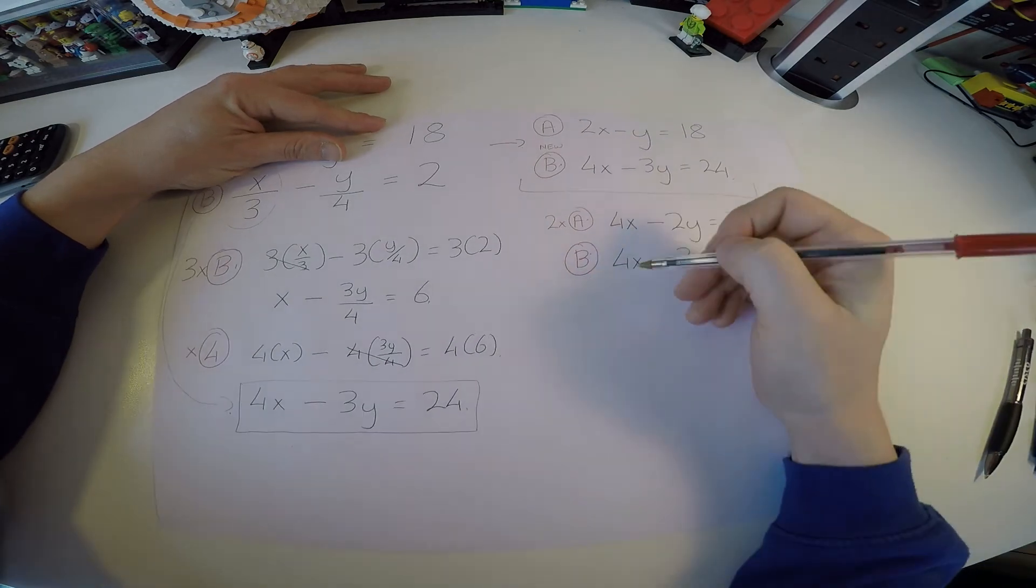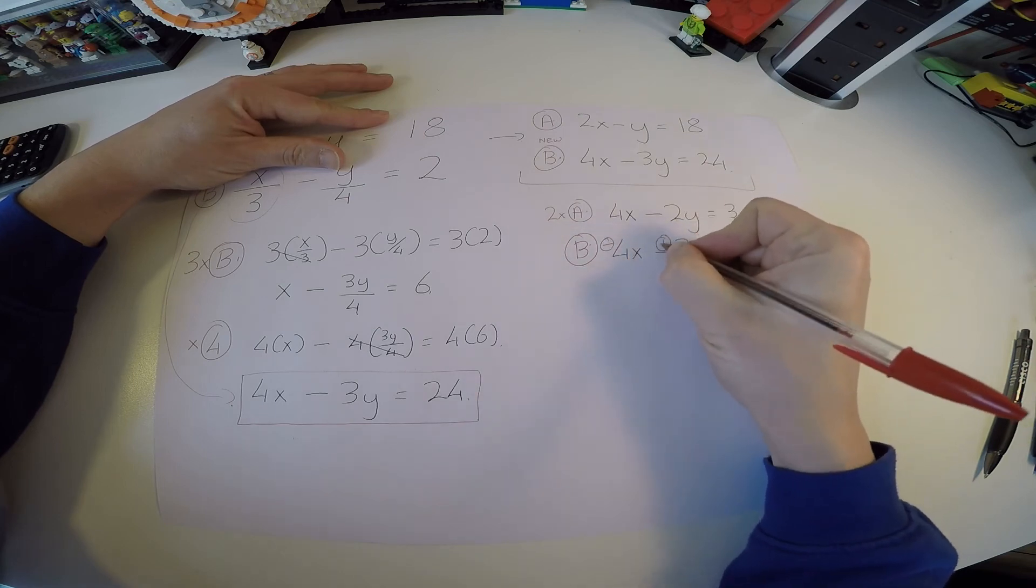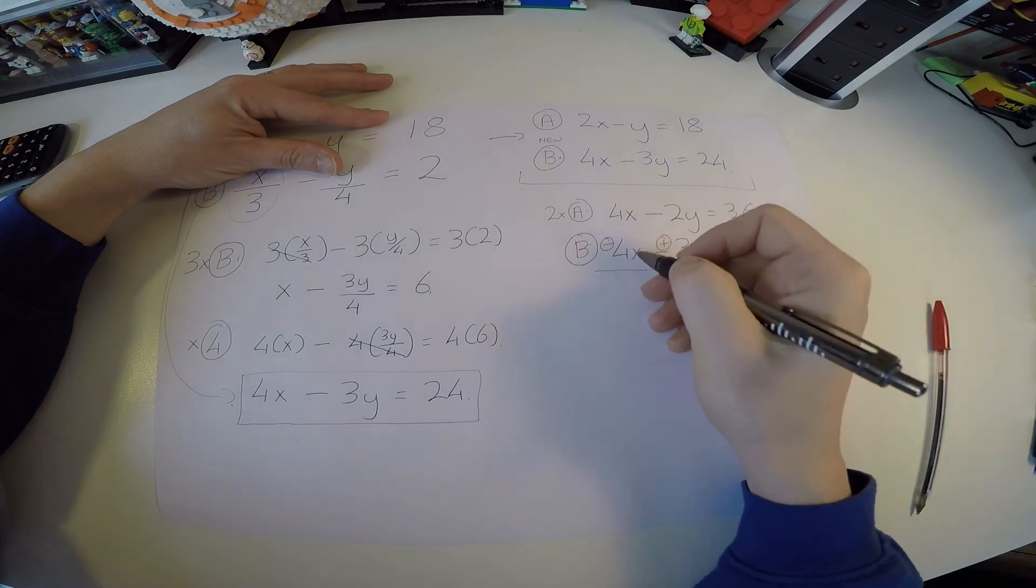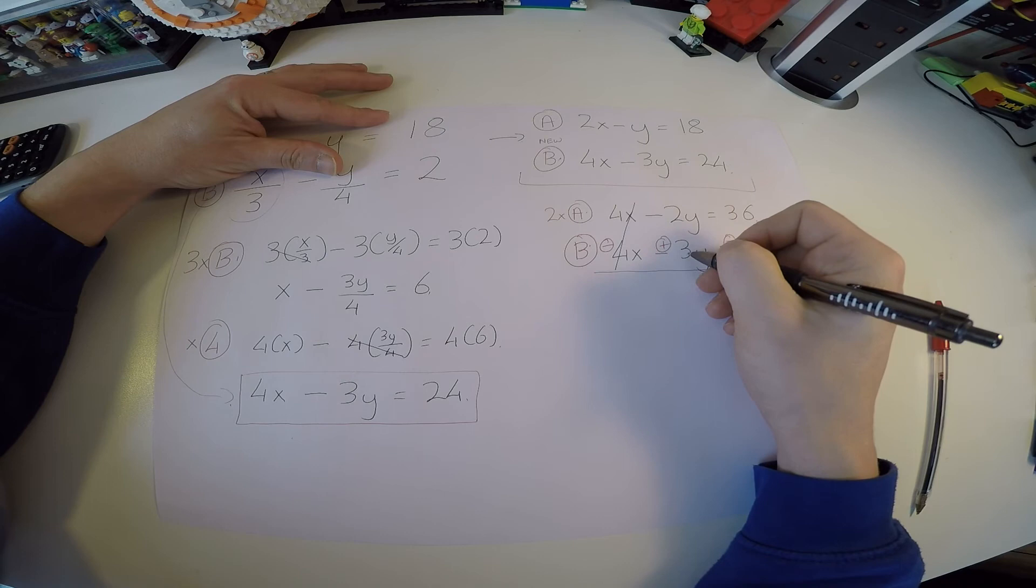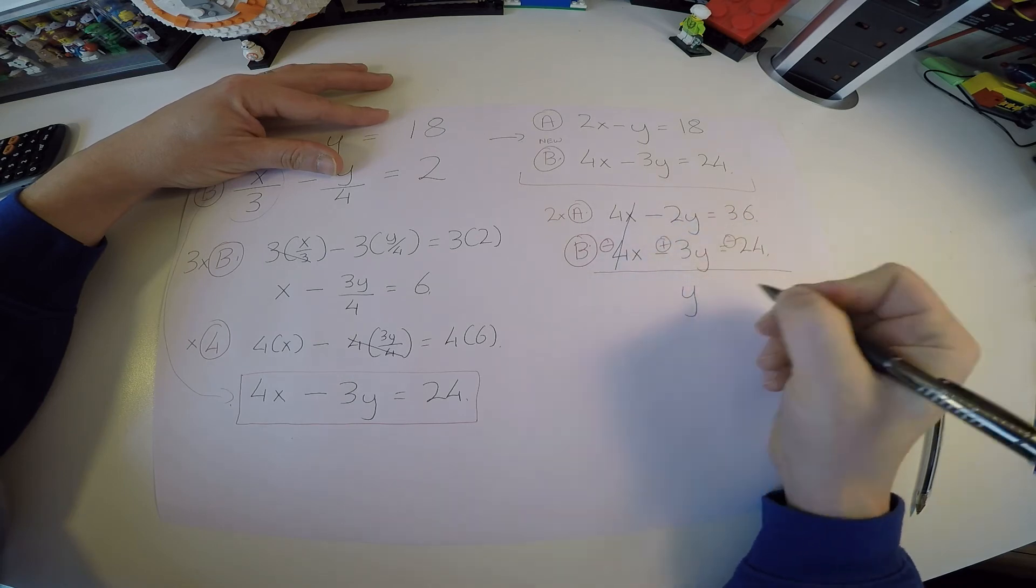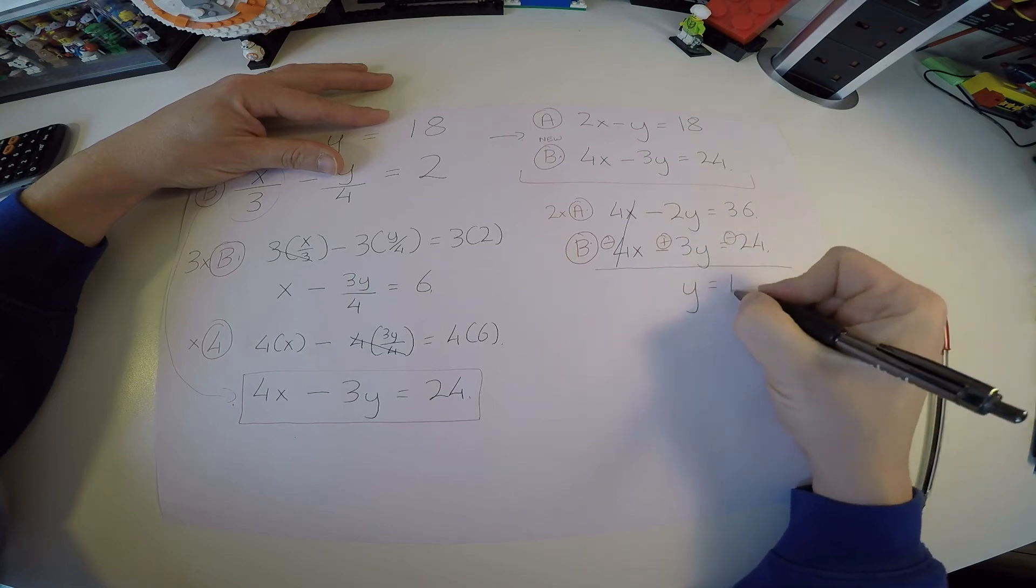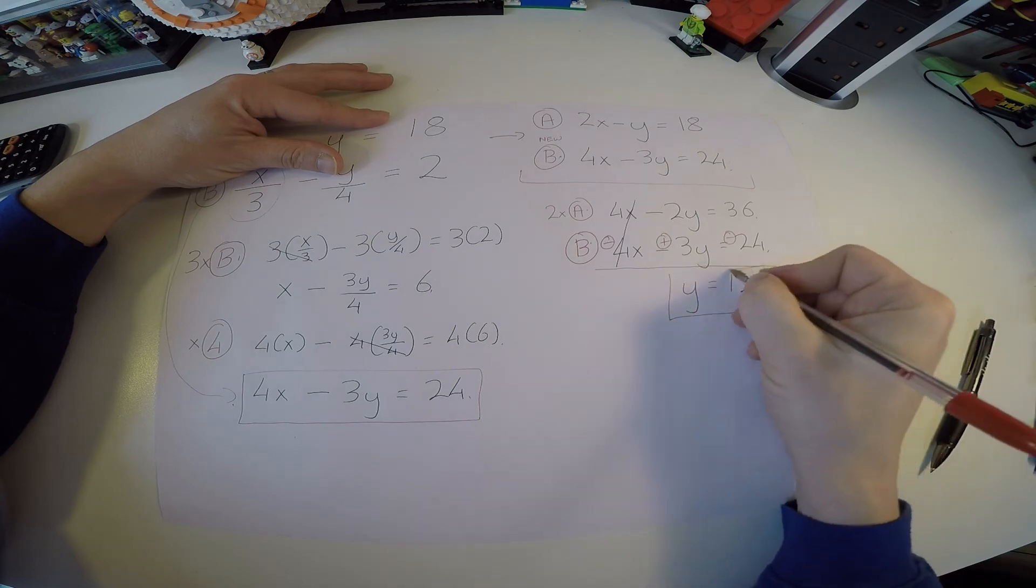But of course to cancel these terms, the signs need to be different. So I need to make this one a minus. This one changes to a plus. This one changes to a minus. Now 4x minus 4x, gone. Minus 2y plus 3y. So it goes from minus 2 and then plus 3. That gives us plus 1y, or just y if you like. 36 minus 24, that's 12. So I actually have straight off the bat y.